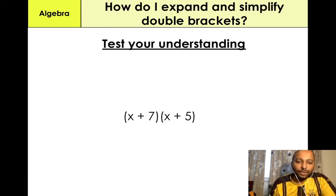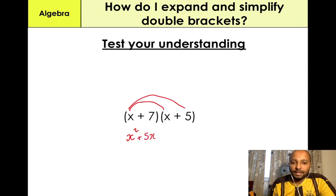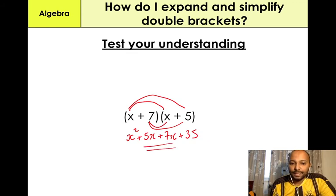Second test-your-understanding question. You can pause the video and attempt this question. X times X gives us X squared. X times 5, which is 5X. Then 7 times X, which is 7X. And then 7 times 5, which is 35. Collecting like-for-like terms in the middle: X squared plus 12X plus 35. That's our final answer. Hopefully you got this answer.